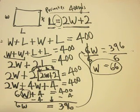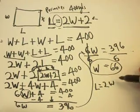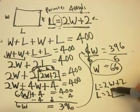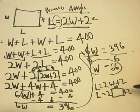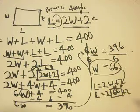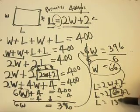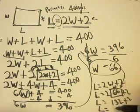We found the width, but the question also asks for the length. We go back to our equation: length equals 2 times W plus 2. We substitute W equals 66 into the empty box. So length equals 2 times 66 plus 2, which is 132 plus 2, which equals 134. The length is 134 yards.